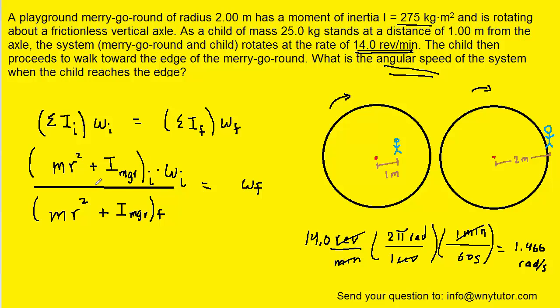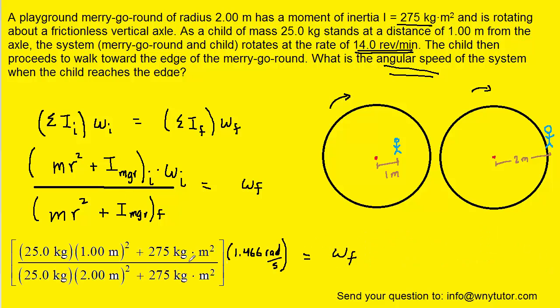And then finally the rotational inertia of the merry-go-round was given to us as 275. And it's not changing. Note that it's not changing from the initial to the final scenario. So we're going to plug 275 in in both the numerator and the denominator of the I_MGR. So we've gone ahead and plugged in all the known values.